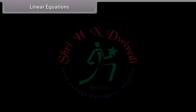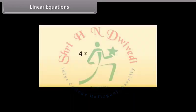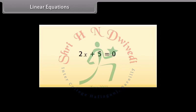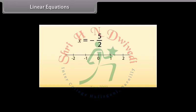Linear equations. We know that a simple linear equation is an equality between two algebraic expressions involving an unknown value called the variable. The two sides of an equation are called right-hand side or RHS and left-hand side or LHS. Consider this equation. The solution or the root of this equation is minus 5 by 2. Let's see where it represents on the number line. Here it is.